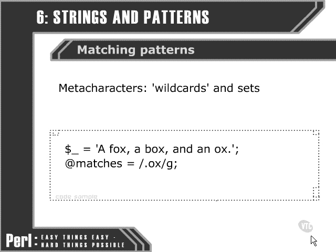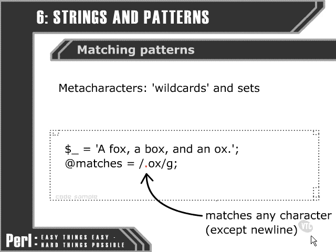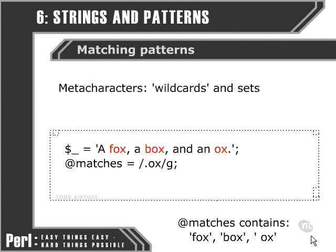What we're doing here is filling the matches array once again, and we're looking at matching a pattern globally using the G modifier. Now, there are no instances of a literal full stop followed by O and X within our default variable, so this looks like our match is going to fail. Actually, the dot is the first of our meta characters — it matches any character at all. It's a wildcard, like the Joker in a pack of cards. So when we run our search for .ox, we're looking for any character followed by O and X. The matches array now contains three elements: fox, because F matches any character, box, and ox.